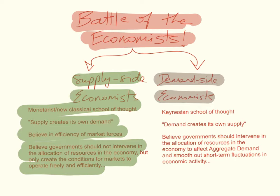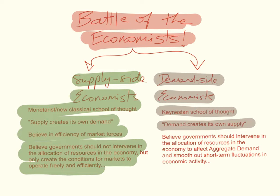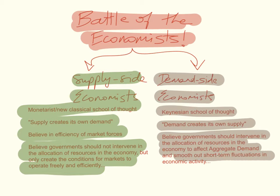What about the demand-side economists? They are known as the Keynesian school of thought, because one of the most influential demand-side economists was John Maynard Keynes. They believe the opposite — demand creates its own supply. They believe that governments should intervene in the allocation of resources in the economy to affect aggregate demand, to help smooth out short-term fluctuations in economic activity.